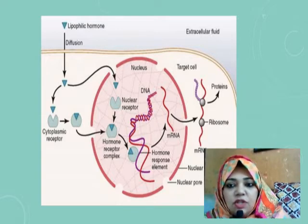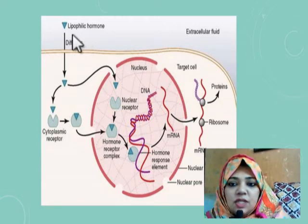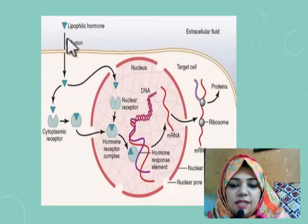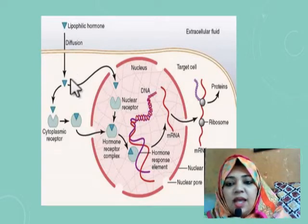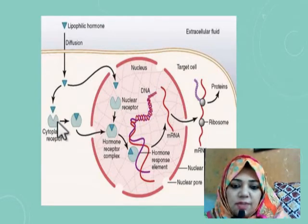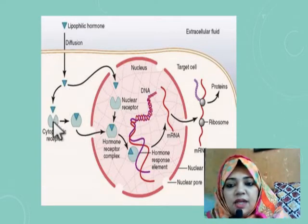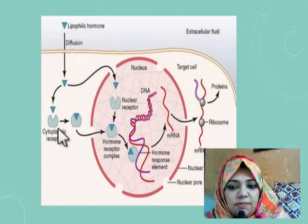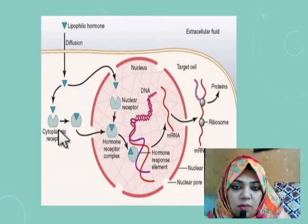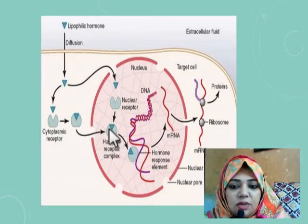Looking at this diagram showing the mechanism of action of steroid hormones: steroid hormones are lipophilic, so they easily diffuse across the cell membrane. They have their receptors in the cytoplasm — these are intracellular receptors. When the steroid hormone diffuses across the cell membrane, it binds with the cytoplasmic receptor and forms the hormone-receptor complex.